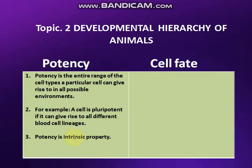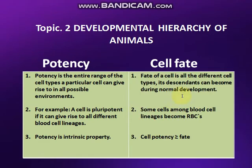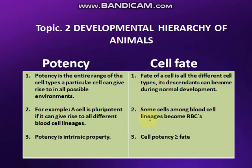Ab dekhte hain ki cell fate kya hoti hai. Fate hum kise kehte hain? Common language mein 'kismat' ko. Jab ek cell divide karta karta apni final image pe pahunch jaata hai, toh woh uski fate hoti hai - uski kismat. Yani sabse last development hokar us cell ne jo banna tha, woh uski cell fate kehlaati hai. Some cells among blood cell lineages become RBCs - toh yeh unki kismat thi ki unhone red blood cell banna tha.